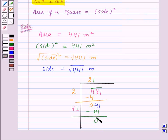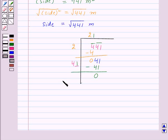Now, since the remainder is 0 and there is no bar left in the number, therefore, square root of 441 is equal to 21. The side is equal to the square root of 441. So, we will get side equal to 21 meters.